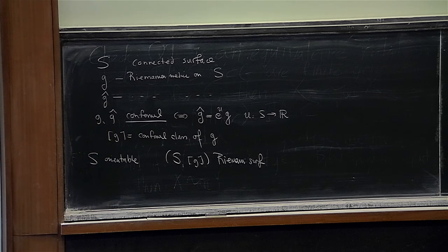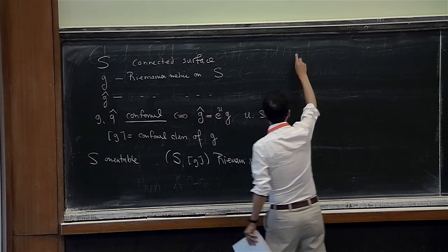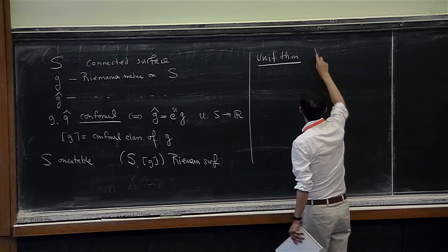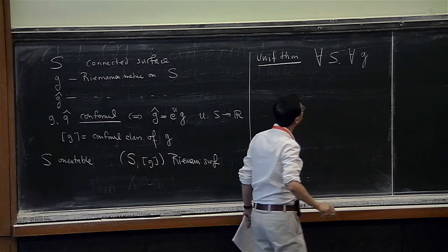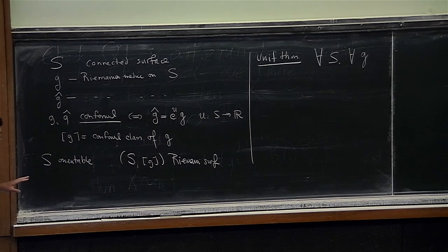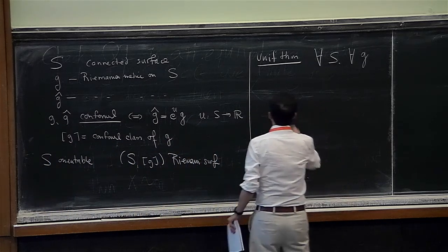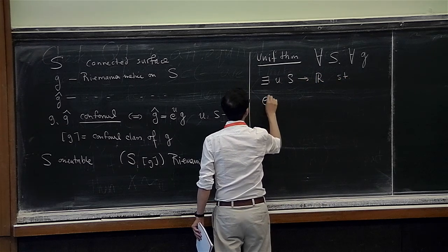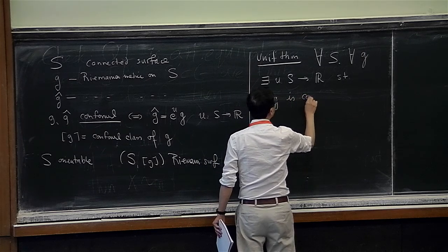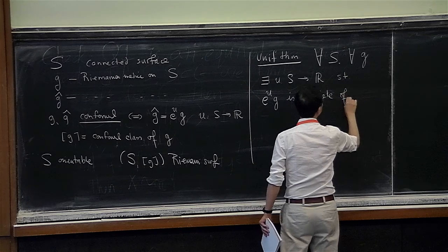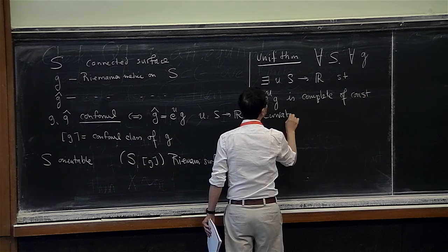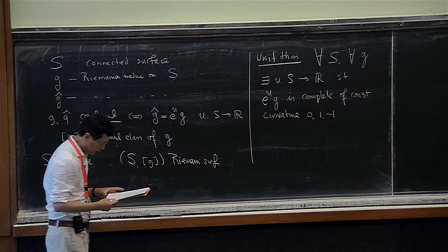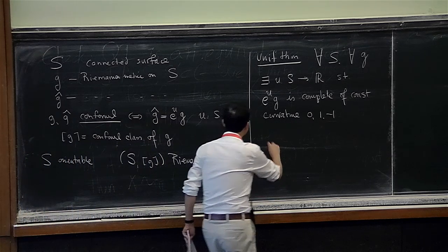The conformal class gives you the Riemann surface. You take this to be the conformal class of the metric — the set of Riemannian metrics which are conformal to G. Assuming S is orientable, this pair is a Riemannian surface. The uniformization theorem states that for any connected surface and any Riemannian metric, I can find in its conformal class a unique complete metric of constant curvature 0, 1, or minus 1, and in the case of minus 1 this is unique.